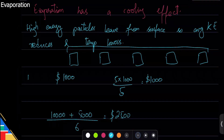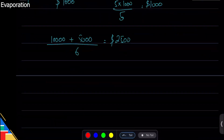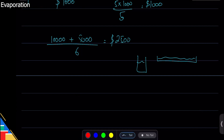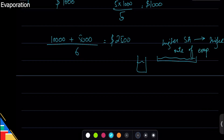Evaporation happens from the surface — that's important. If the surface area is higher, evaporation is faster; if smaller, evaporation is lower. For example, if you have two pans — one wide and one narrow — the one with higher surface area will cool down faster because particles are able to escape more easily. And again, it's always the high-energy particles that do that.